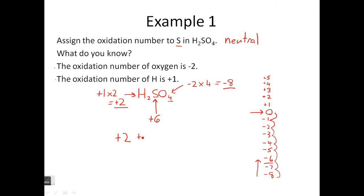So basically, you want to make all these numbers here equal to zero. So if you add these and eight positives, cancel out the eight negatives to give you zero, because H2SO4 is a neutral compound.